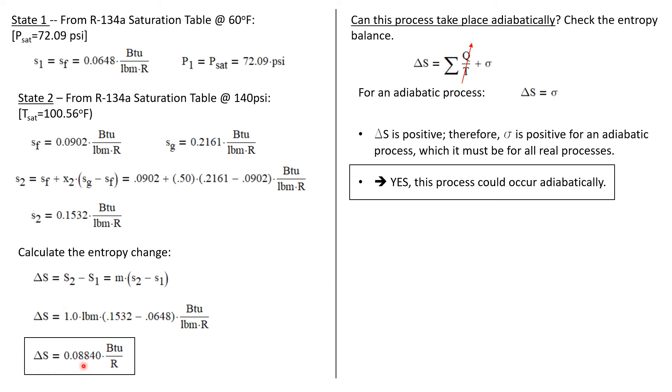Well during the process the entropy change is positive, that means s₂ is greater than s₁, so ΔS is positive, indicating that for this entropy balance to occur, σ must be positive. Well σ must be positive—σ is always positive, at the very best it's zero for a reversible process. But because σ must be positive and because ΔS is positive, then this entropy balance is satisfied and we can answer yes, this process could occur adiabatically.